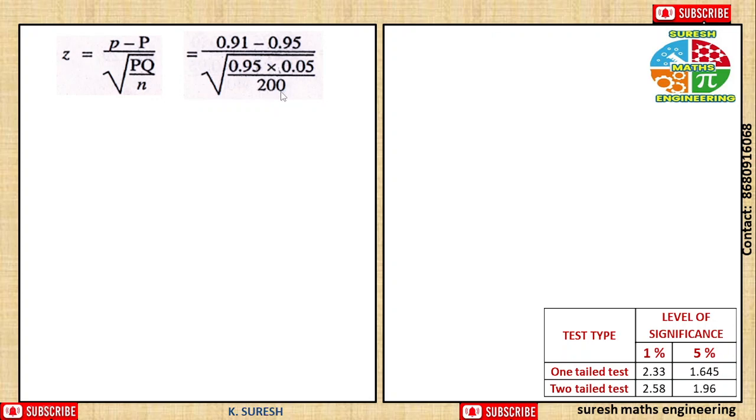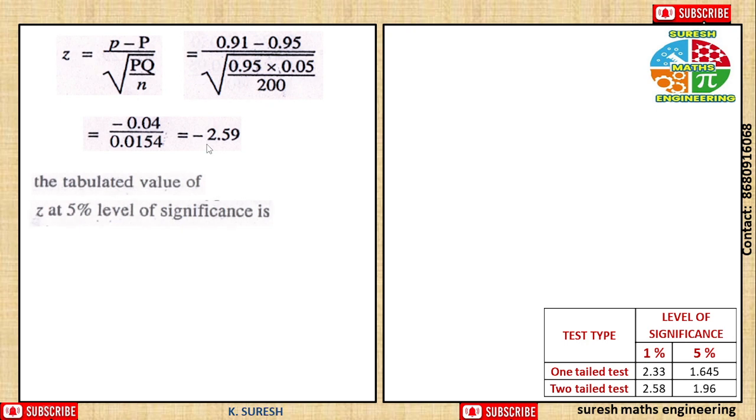Using the calculator, we get 0.91 minus 0.95 divided by square root of 0.05 times 0.05 divided by 200. This equals minus 0.04 divided by 0.0154, which equals minus 2.59.